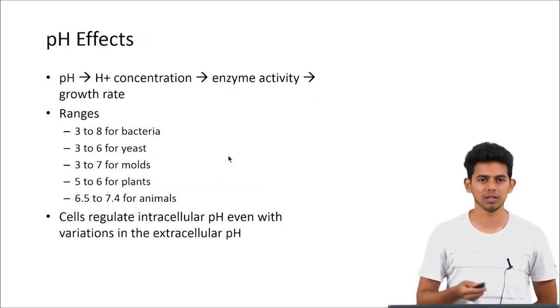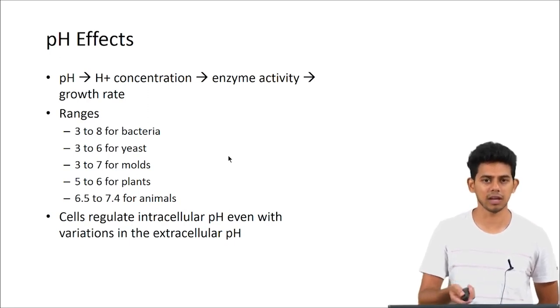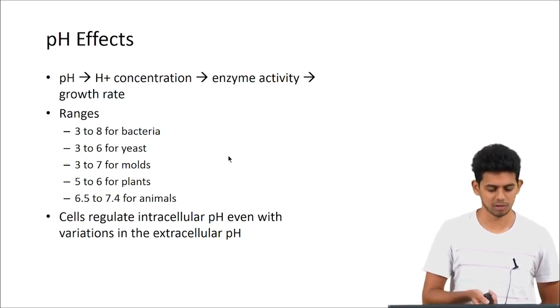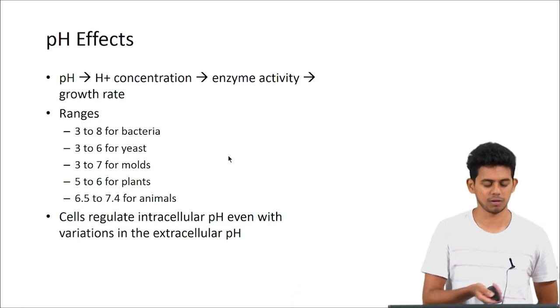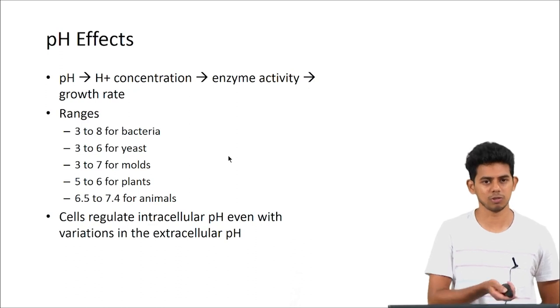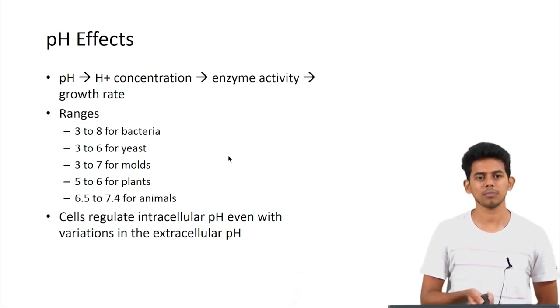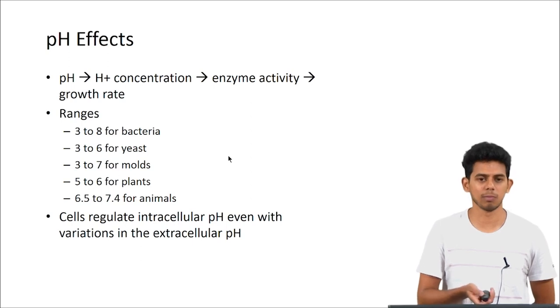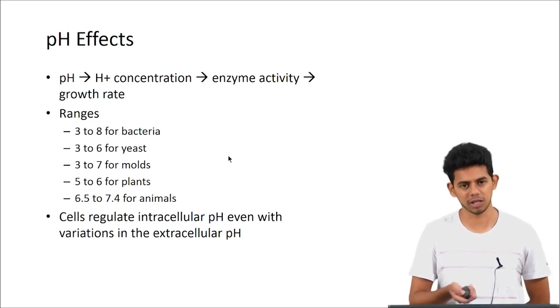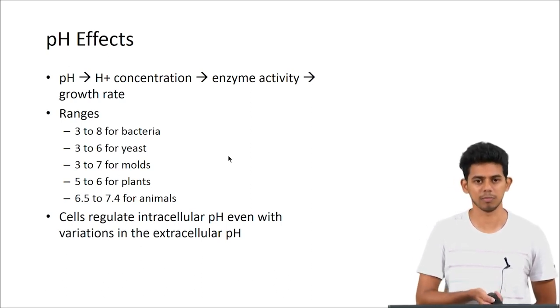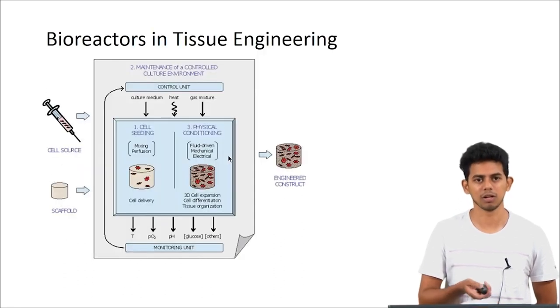Coming to pH effect - pH is basically the H+ concentration which in turn affects the enzyme activity and the growth rate. These are a few examples of different organisms and their preferable pH range. For mammalian tissues it is usually around 6.5 to 7.4 pH. The cells are capable of regulating their intracellular pH even when there is a variation in the external pH, so there is a buffering system usually for it.